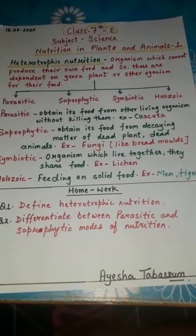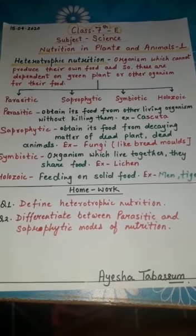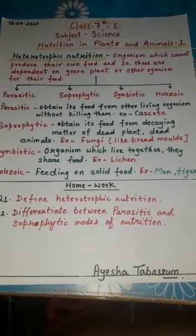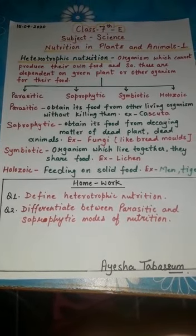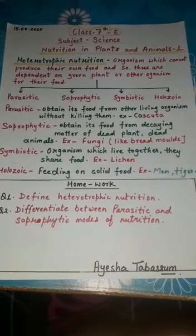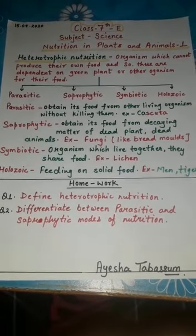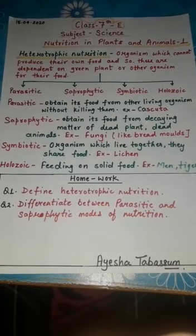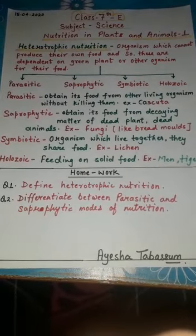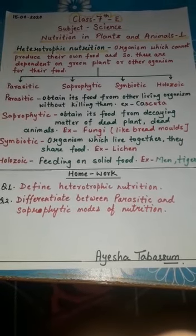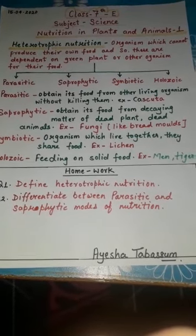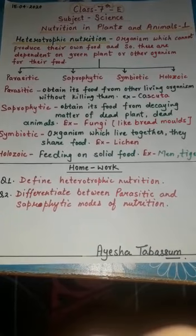In this lecture, we will mainly focus on heterotrophic mode of nutrition. The word heterotroph is made of two words: hetero and trophs. Hetero means 'another' and trophs means 'nutrition.' So the word heterotrophs means depending on others for nutrition. Plants which cannot produce their own food depend on green plants or other organisms for their food.